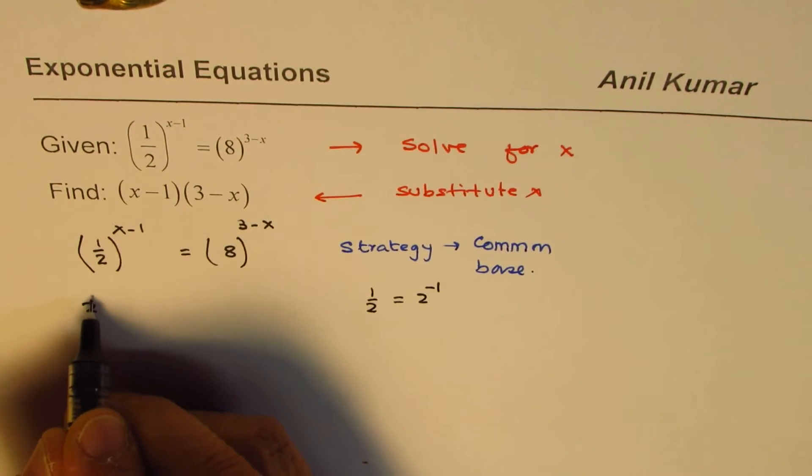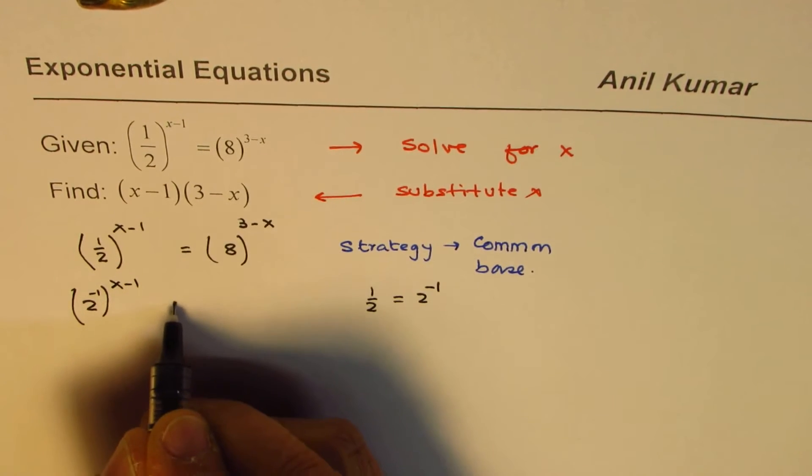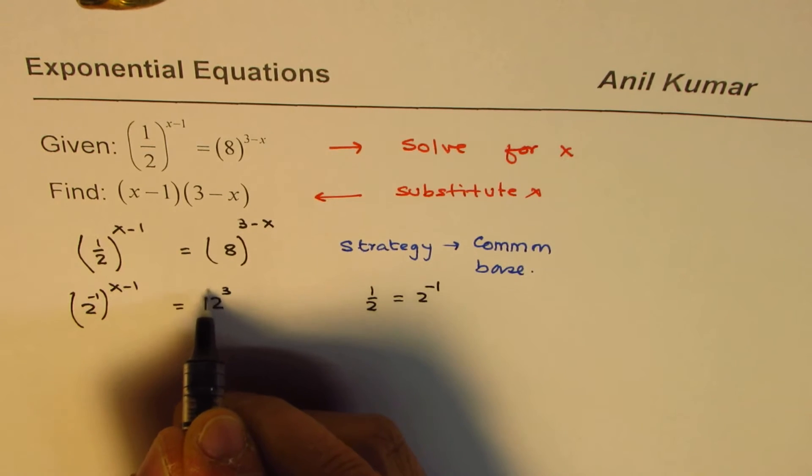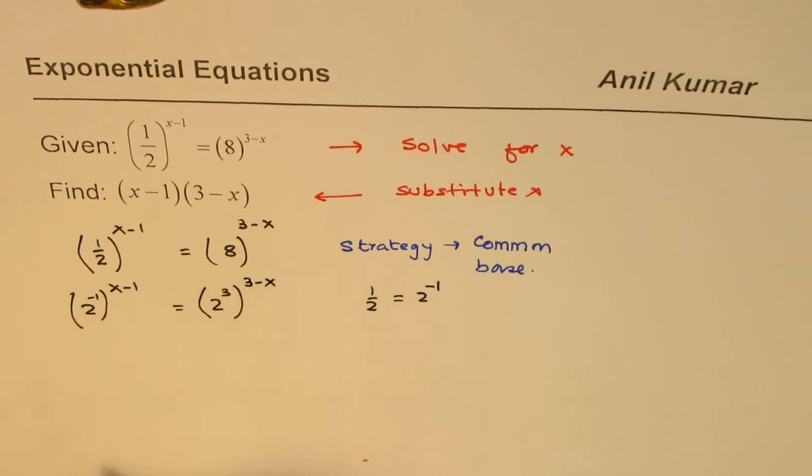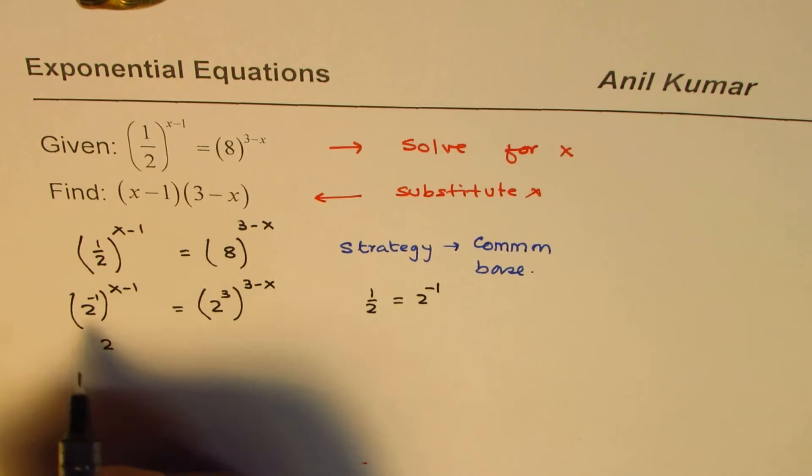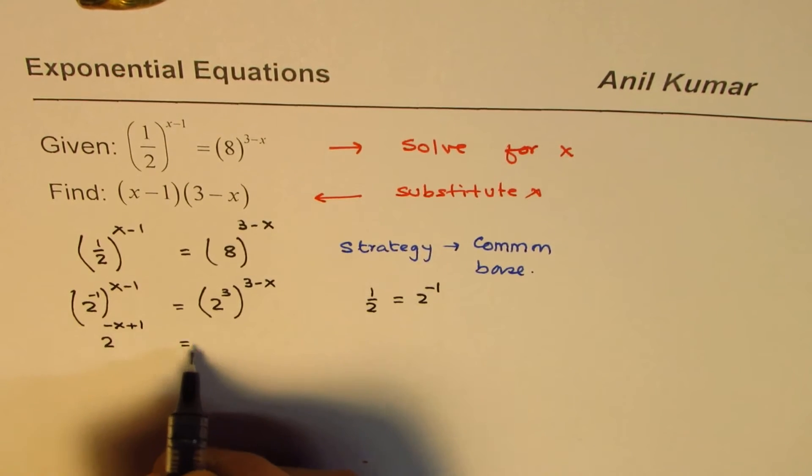I'll write this as 2^(-1) to the power of (x-1), and 8 can be written as 2^3, right? So 8 is written as 2^3, to the power of (3-x). Now we could write this as 2 to the power of, when you multiply this you get -x+1, equals to 2 to the power of...